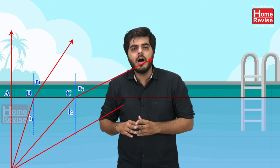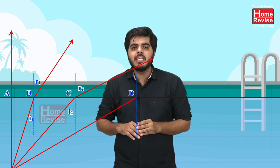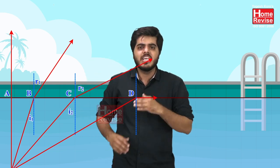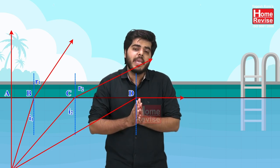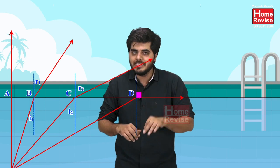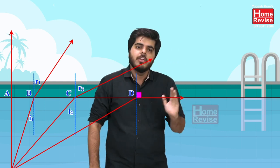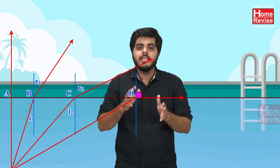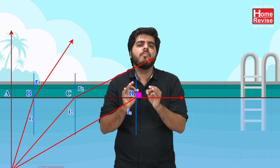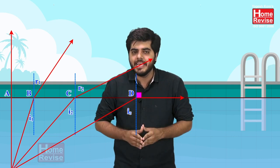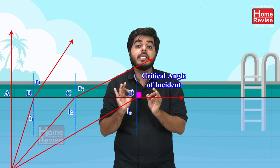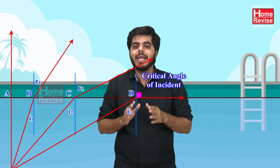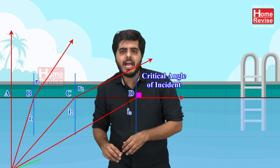Another ray strikes the surface at point D. This ray bends such that the refracted ray makes an angle of 90 degrees with the normal — it travels along the surface. The angle of incidence for which the angle of refraction is 90 degrees is called the critical angle of incidence. At the critical angle, the angle of refraction equals 90 degrees.